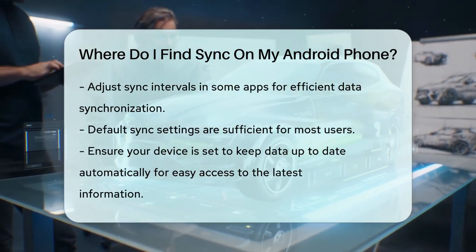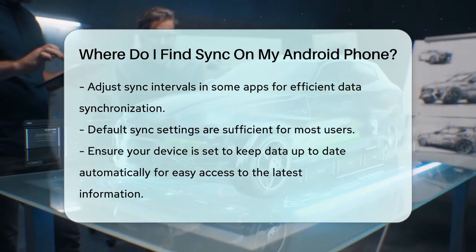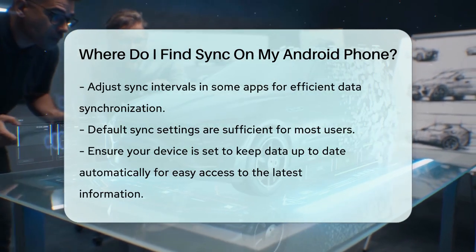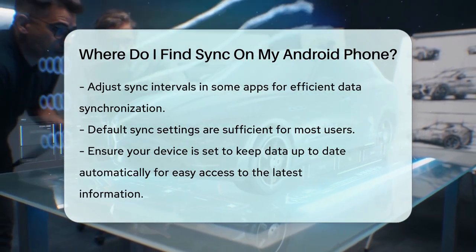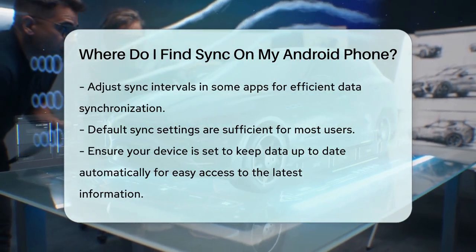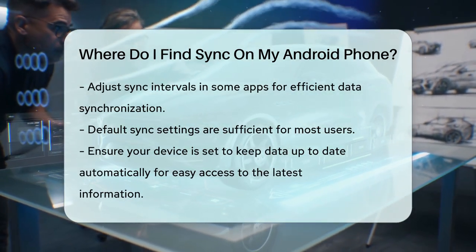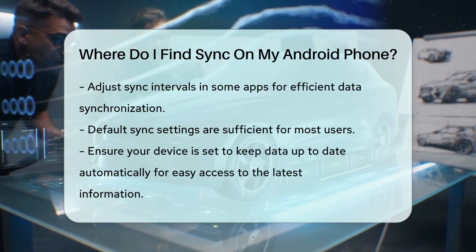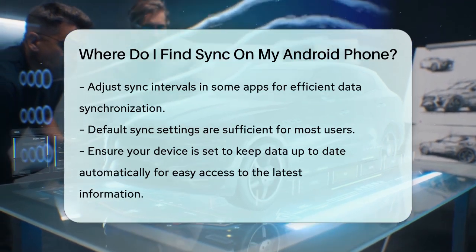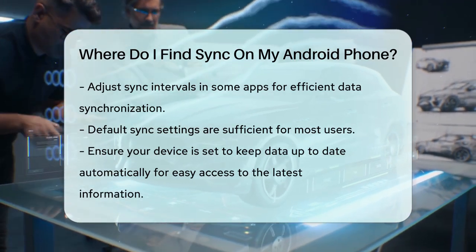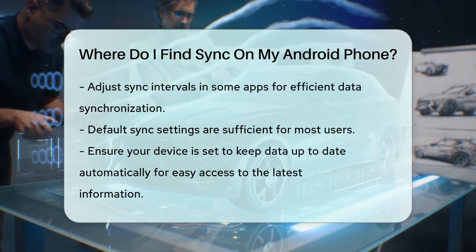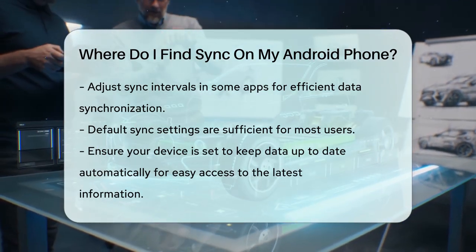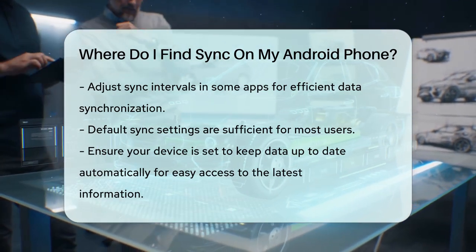In summary, to find and manage sync settings on your Android phone, go to the Settings app, navigate to the Accounts or Accounts and Backup section, select your account, and toggle on the types of data you want to sync. Don't forget to enable Auto Sync if you want your device to keep everything up to date automatically. This way, you'll always have the latest information at your fingertips.